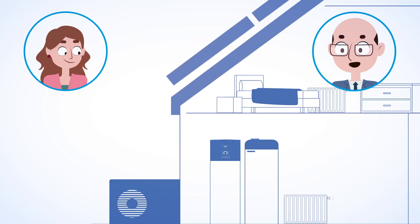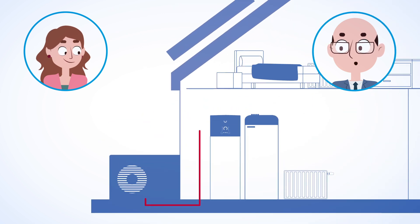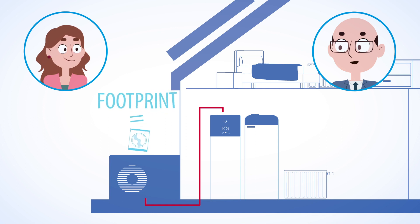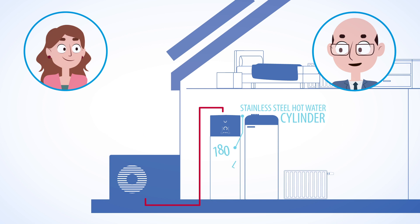Hey, let's have a look inside. Have a look at the heat pump indoor unit. It has a footprint equal to a washing machine. It includes a stainless steel hot water cylinder of 180 liters or even 230 liters to make sure there's plenty of hot water for bathing, showering.